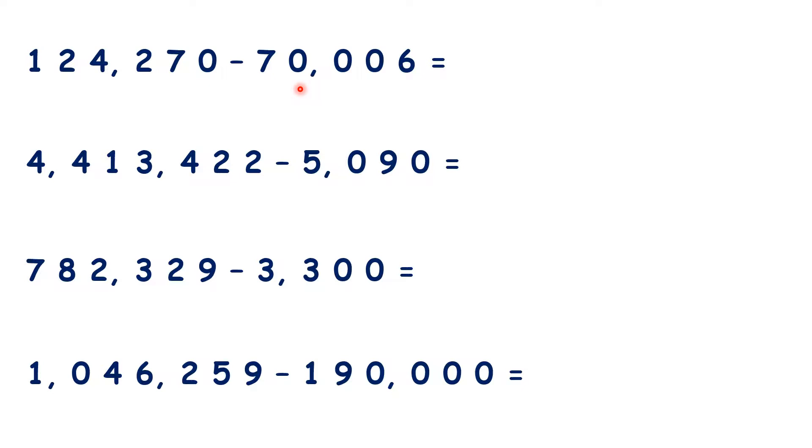For this first question, we can see that we're subtracting 7 ten thousands, but as we only start with 2 ten thousands, we know that our hundred thousands digit is going to change as well, because we'll need to regroup or exchange.